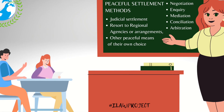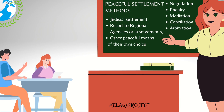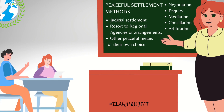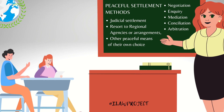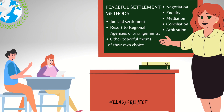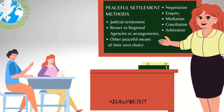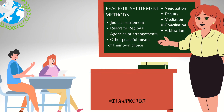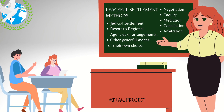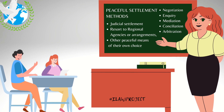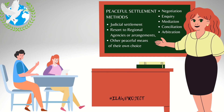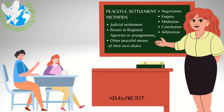In terms of methods available to states for dispute settlement, there are two international instruments that serve as pointers: the UN Charter, specifically Article 33, and the 1970 Declaration on Principles of International Law concerning friendly relations and cooperation among states. Both of these instruments enumerate the following methods: negotiation, inquiry, mediation, conciliation, arbitration, judicial settlement, and resort to regional agencies or arrangements or other peaceful means of their own choice.